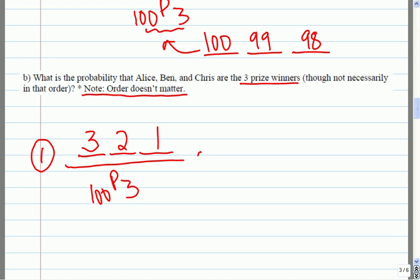The top three prizes would be 100 P3. The other way we could count this problem out is we could say, if order doesn't matter, how many groups does Alice, Ben and Chris represent? One group. And if order doesn't matter in the prize, then that's how many groups of top three finishers we could have. So both of these will have the same answer.